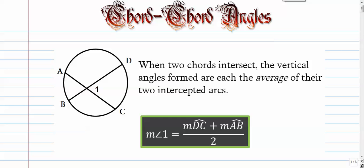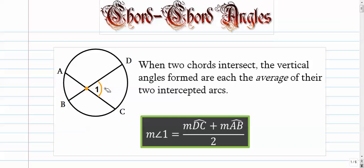Our next video is Chord-Chord Angles. We have two chords coming together in a circle, meeting at a point. Notice the point doesn't have to be in the center — it could be off-center. This angle is not a central angle and it's not an inscribed angle. It's just an angle formed when two random chords come together at any point inside the circle.